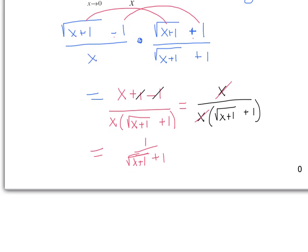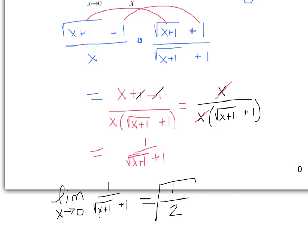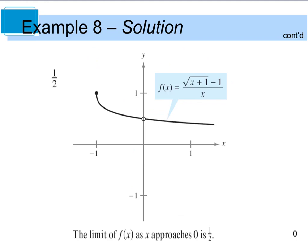So let's go ahead and start with our original problem. This said the limit as x approaches 0 of 1 divided by the square root of x plus 1 plus 1. Now if I do direct substitution and plug 0 in for x, I end up with 1 divided by the square root of 0 plus 1, which is 1, plus 1 is 2. So I end up with 1 half. If we look at this graphically, you'll see that the function looks like this. Make sure we know that at x equals 0, there is an undefined point, but otherwise the rest of the graph is accurate on your calculator.